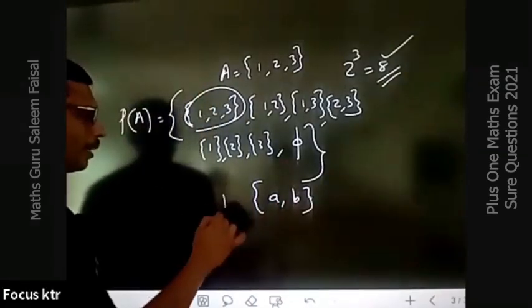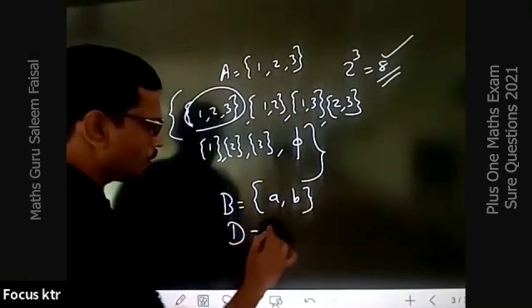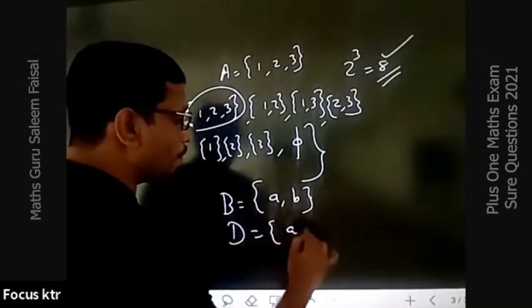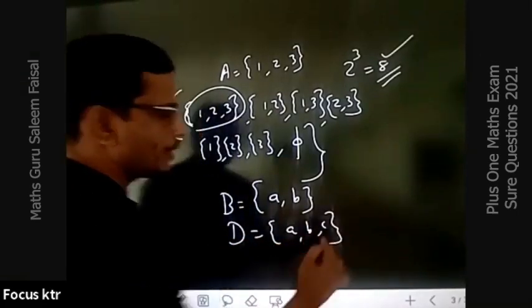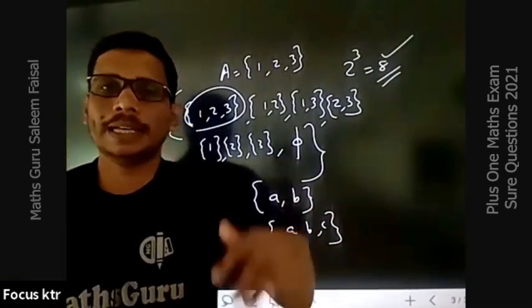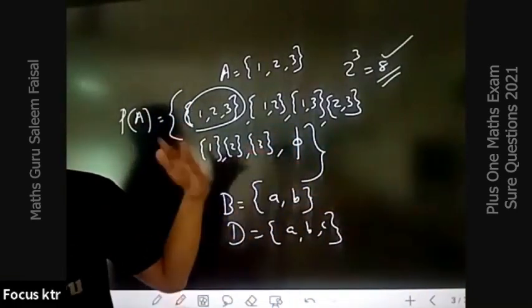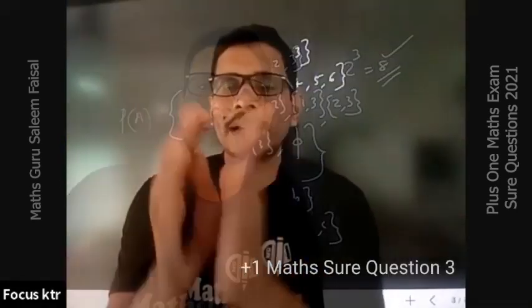Besides the subset, where is the subset? A, B, C. The subsets are {A, B, C}, {A, B}, {A, C}, {B, C}, {A}, {B}, {C}, and the empty set.